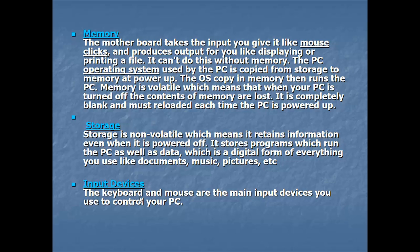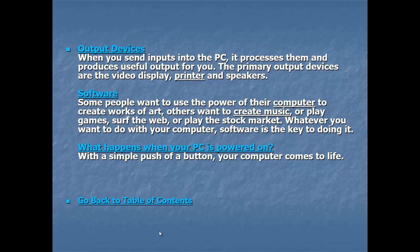When you are watching a movie, memory is being used. A storage device is different — it is where you store movies, images, and other data that you are not currently using, but can access later. When you read something from a storage device, it is loaded into memory. Input and output devices and software work together in this way to run a computer.